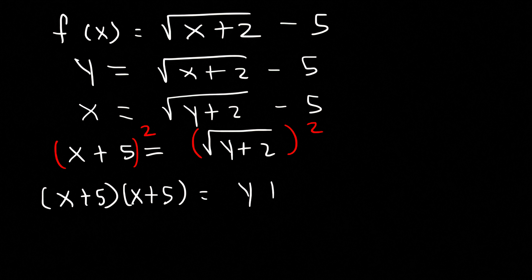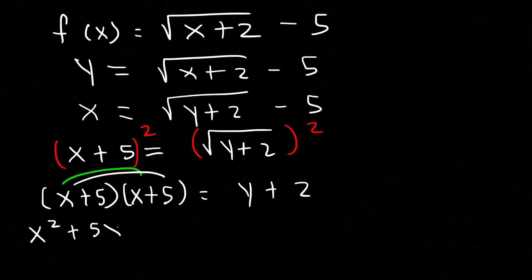Now on the left, we need to FOIL. x times x is x squared. And then x times 5, that's 5x. And then we have another 5 times x. And then it's 5 times 5, which is 25. So that's equal to y plus 2.